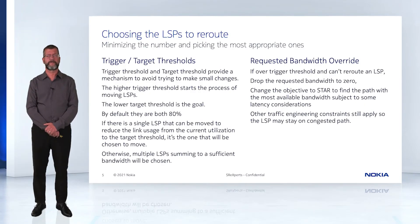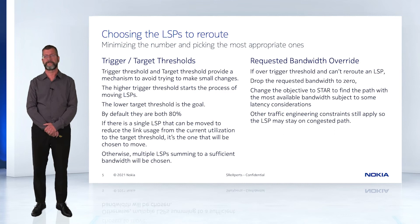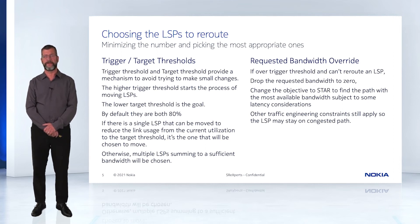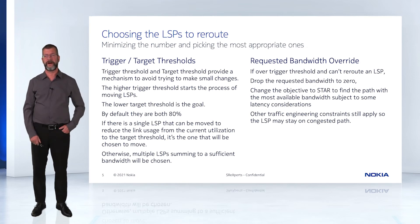The second technique is focused on achieving balance when large parts of your network are at close to full capacity. If you have exceeded the trigger threshold and can't reroute an LSP due to their constraints, a temporary change is made to the LSP to drop the requested bandwidth to zero, and the objective of that LSP is changed to use the Bell Labs proprietary STAR algorithm to find a path through the network with the most available bandwidth, while not taking too long of a path. Note that other traffic engineering constraints on that LSP will still apply, and the LSP may still stay on the congested path.